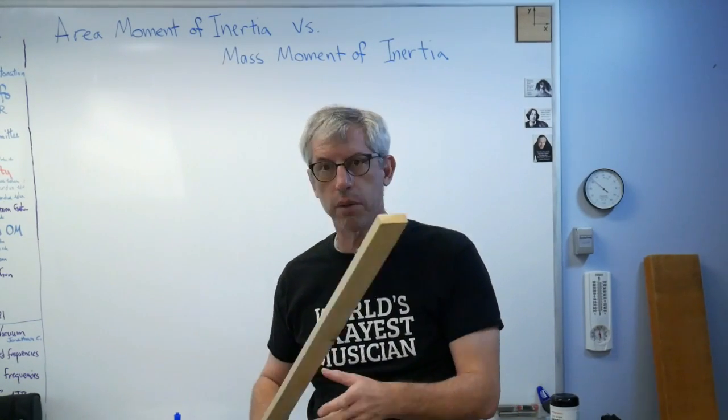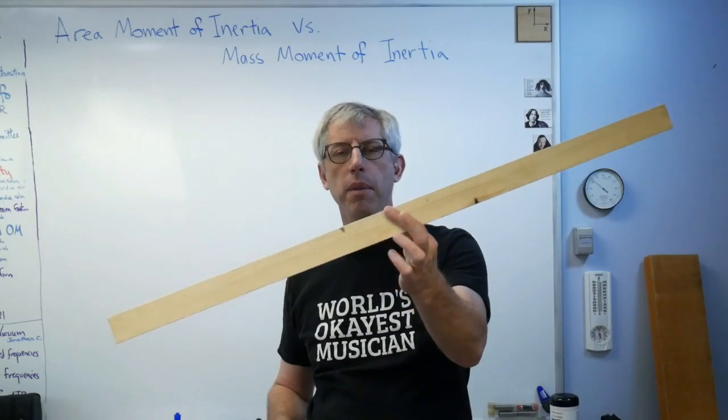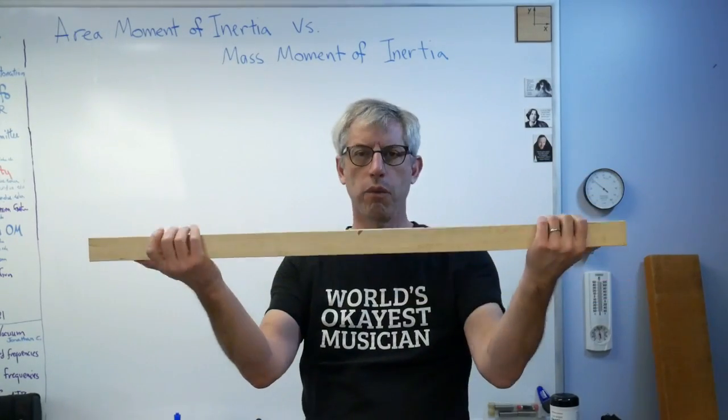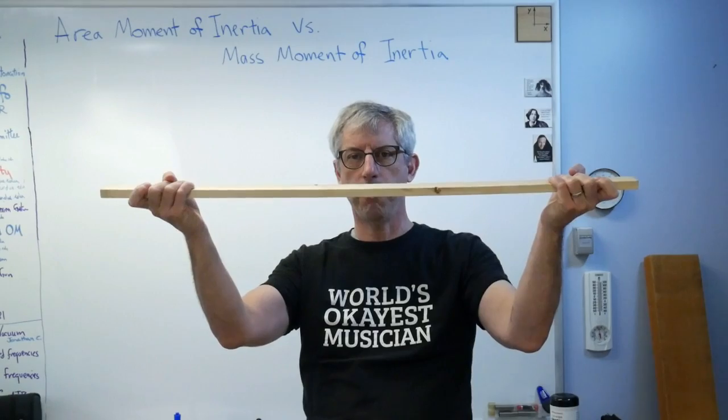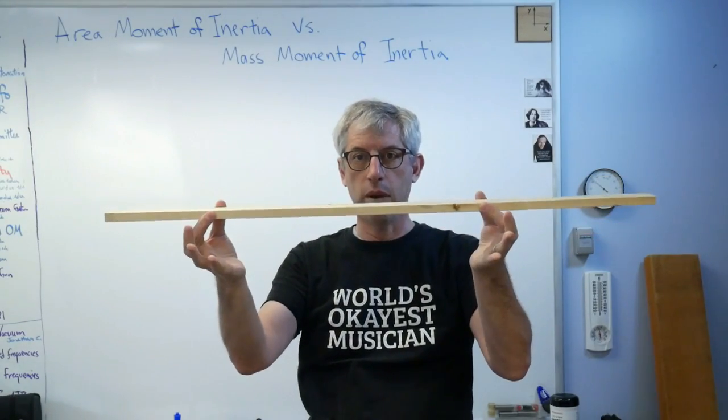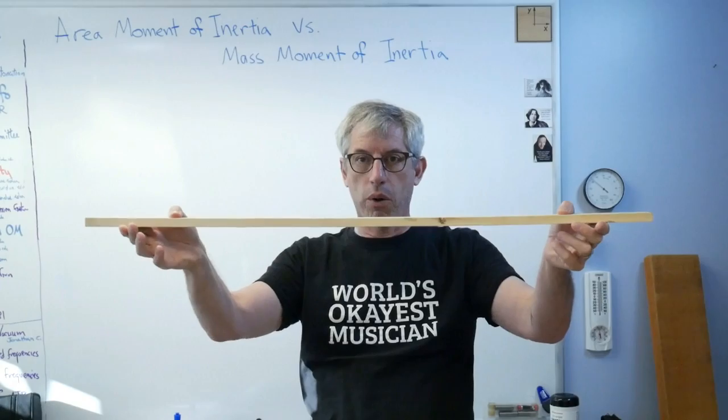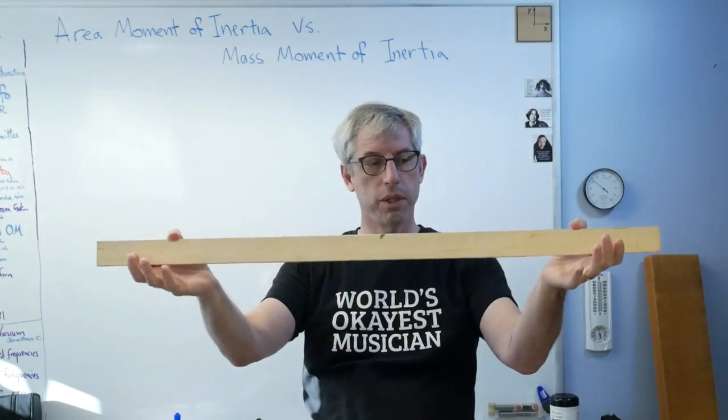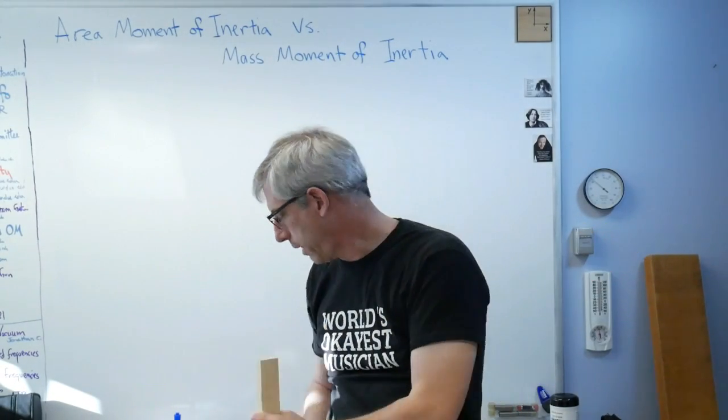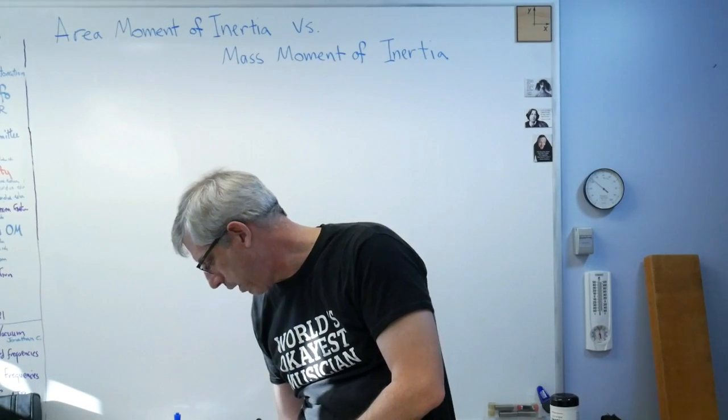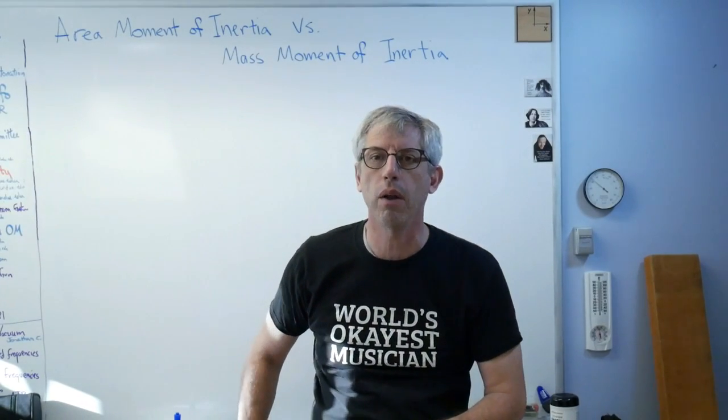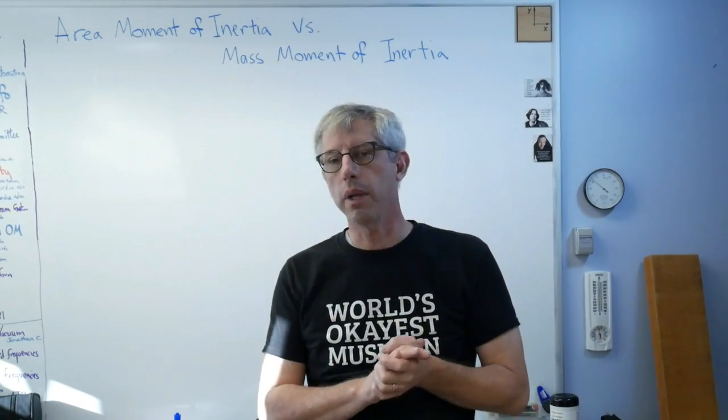We're talking about how beams bend. Here's a beam - real stiff this way, not real stiff if I push down on it that way. That's area moment of inertia - not a lot of stiffness due to shape this way, whole bunch of stiffness due to shape this way. I write that down in my notebook and learn to calculate with it.